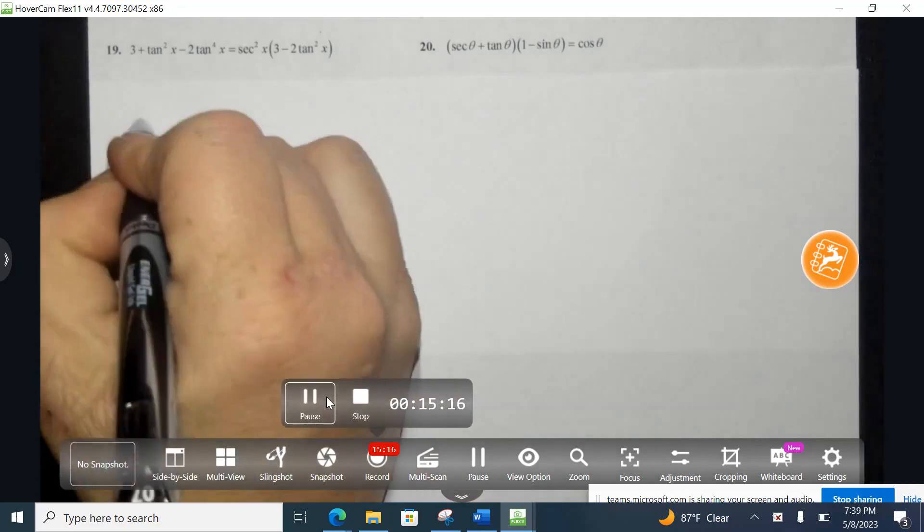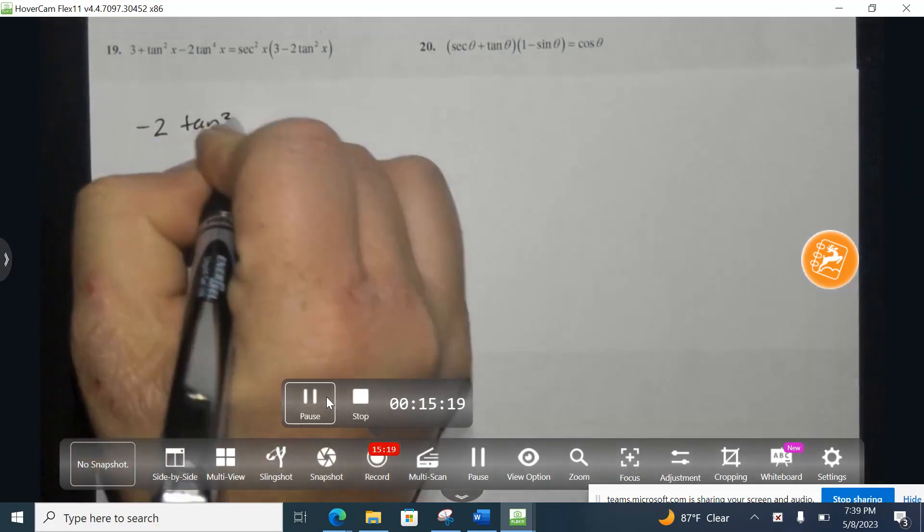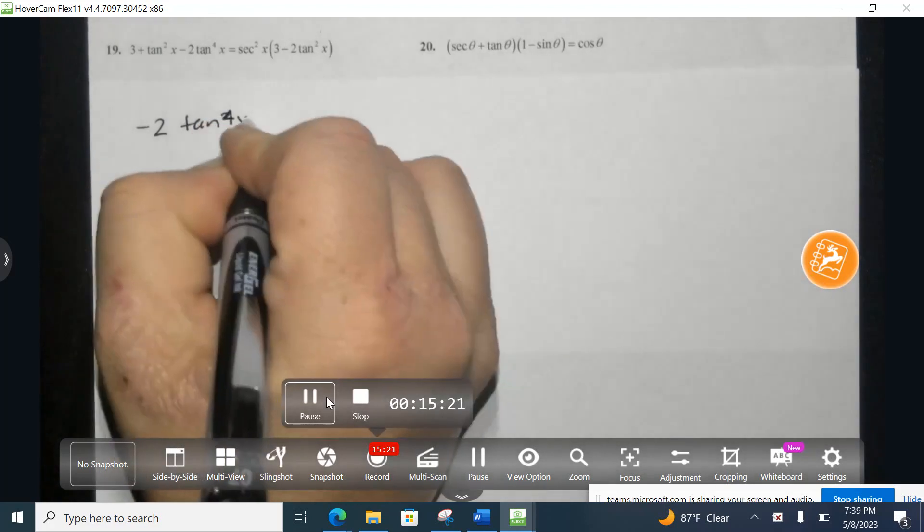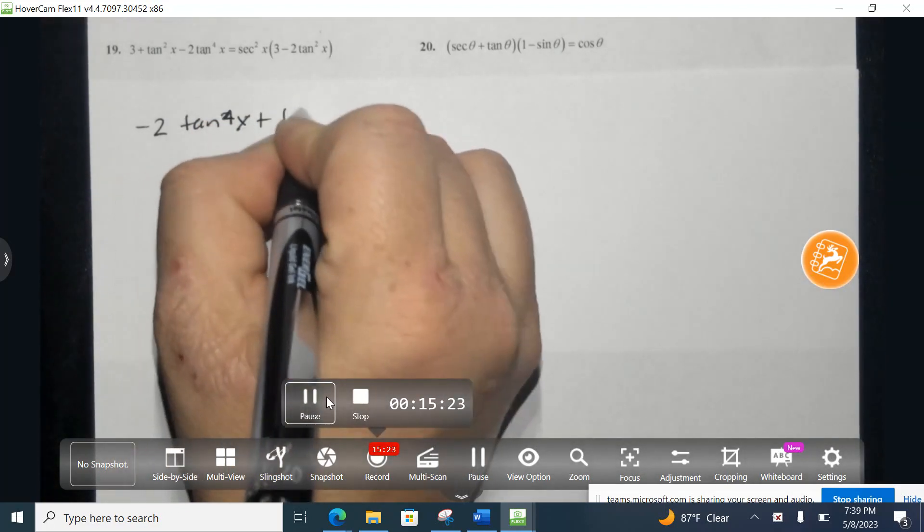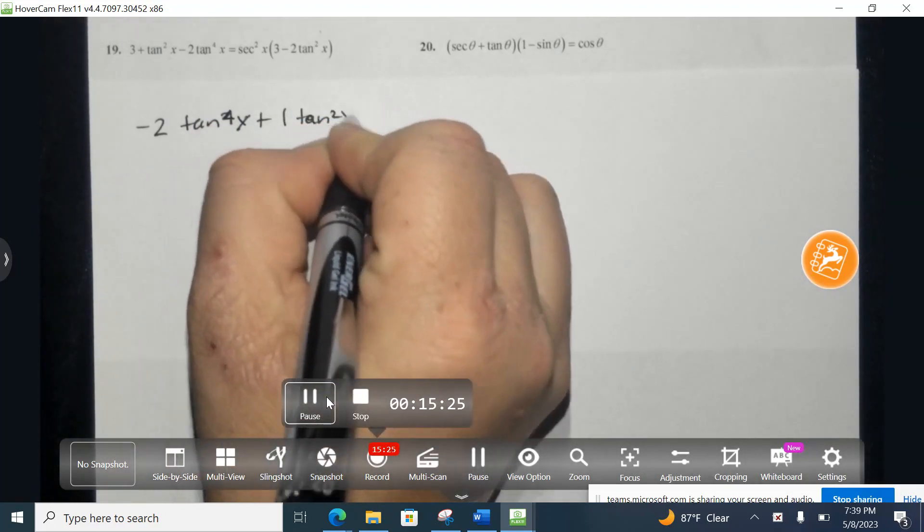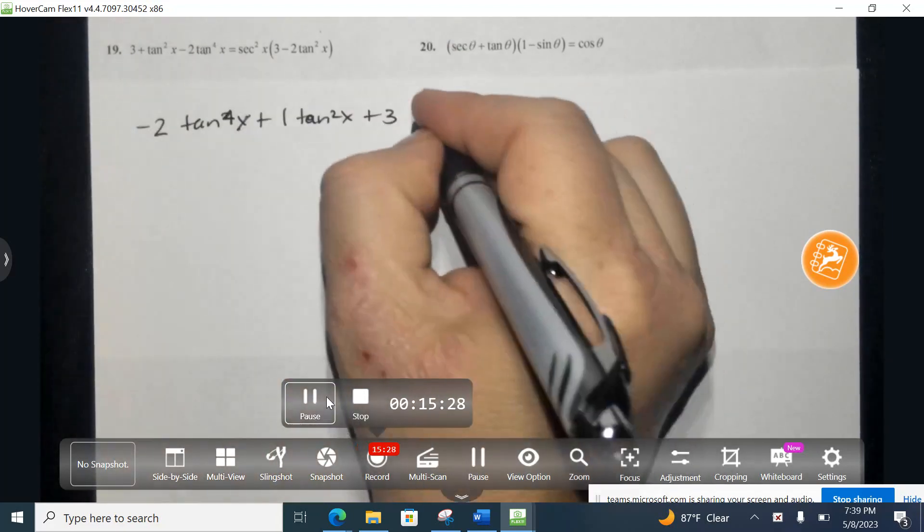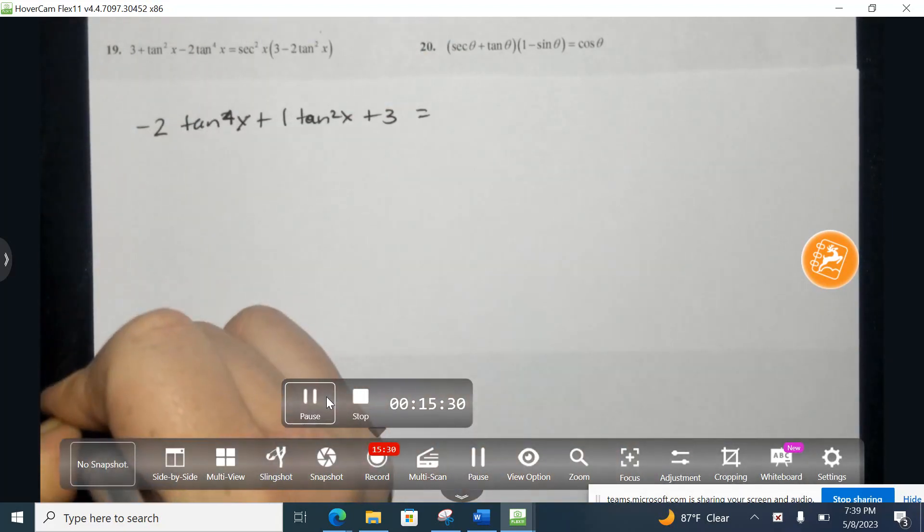So the highest exponent first, negative 2 tangent to the fourth x plus 1 tangent squared x plus 3. This is all on the left-hand side, I know it equals this quantity on the right. Alright, after that, I try to factor this.